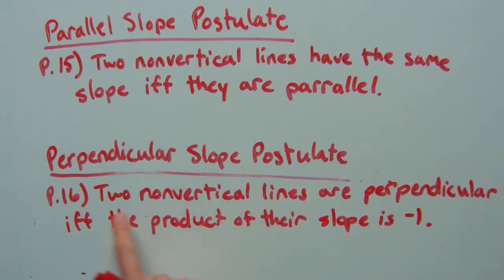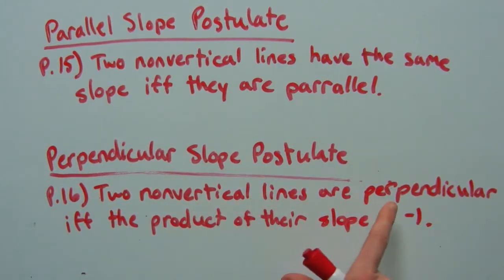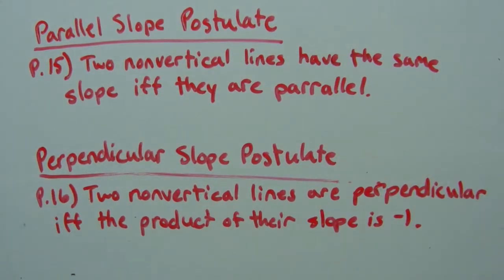The perpendicular slope postulate, P16, says two non-vertical lines are perpendicular if and only if the product of their slopes is negative one. So that's saying if two non-vertical lines are perpendicular, then the product of their slopes is negative one. Or if two non-vertical lines have slopes where their product is negative one, then the lines are perpendicular. If you need a review on slopes and writing equations using slopes, please view the pre-algebra and algebra videos I have already posted.